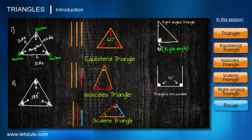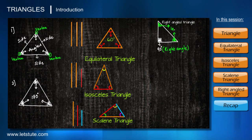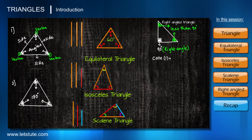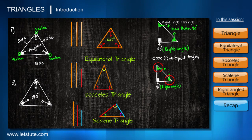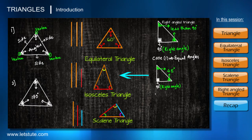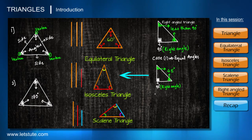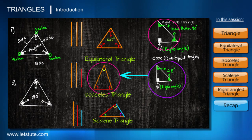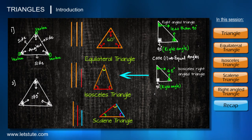If one angle is a right angle, the remaining two angles must be less than 90 degrees. These two angles may or may not be equal to each other. If they are equal, each must be 45 degrees. This follows the property of an isosceles triangle — when two angles are equal, the sides opposite to those equal angles are also equal. So such a triangle follows both isosceles and right-angle properties, and is called an isosceles right-angled triangle.